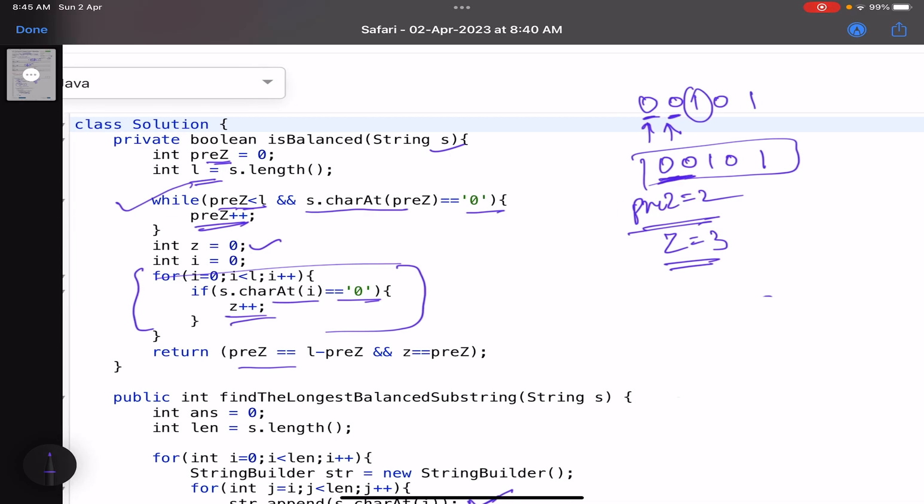Now, to make it a balanced string, what are the two conditions that I have to satisfy? The number of zeros and the number of prez zeros should be equal because if they are not equal, then that means I do not have all the zeros in the form of prefix zeros. Prez tells me the prefix zero. Z tells me the total number of zeros. These two have to be equal. Then that means all the zeros are before one. That's the first condition.